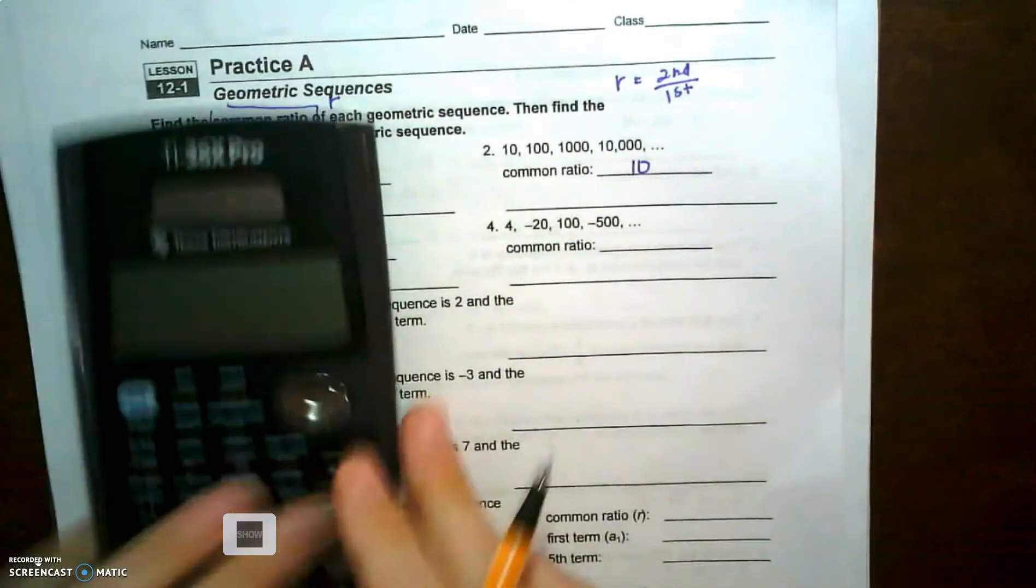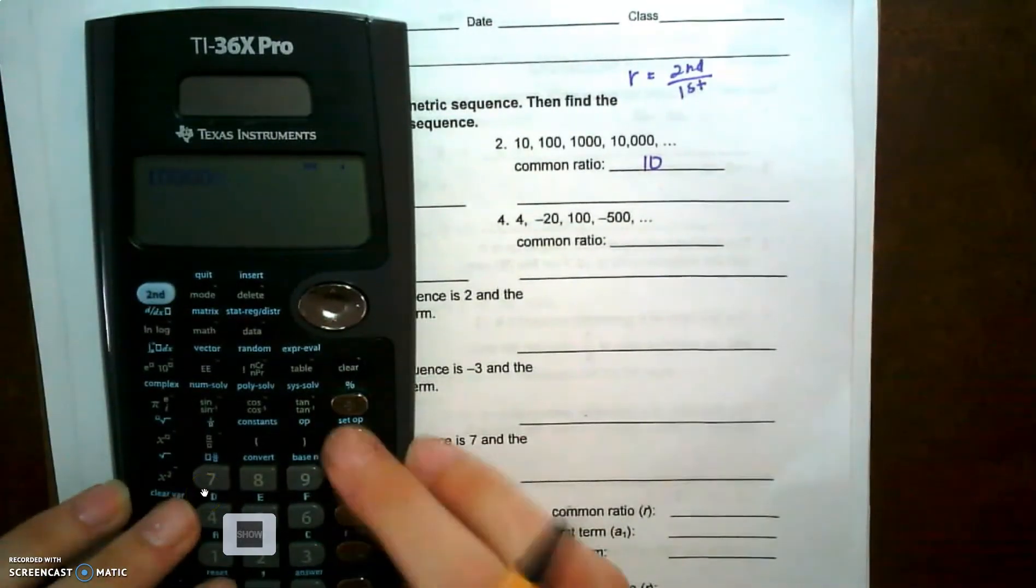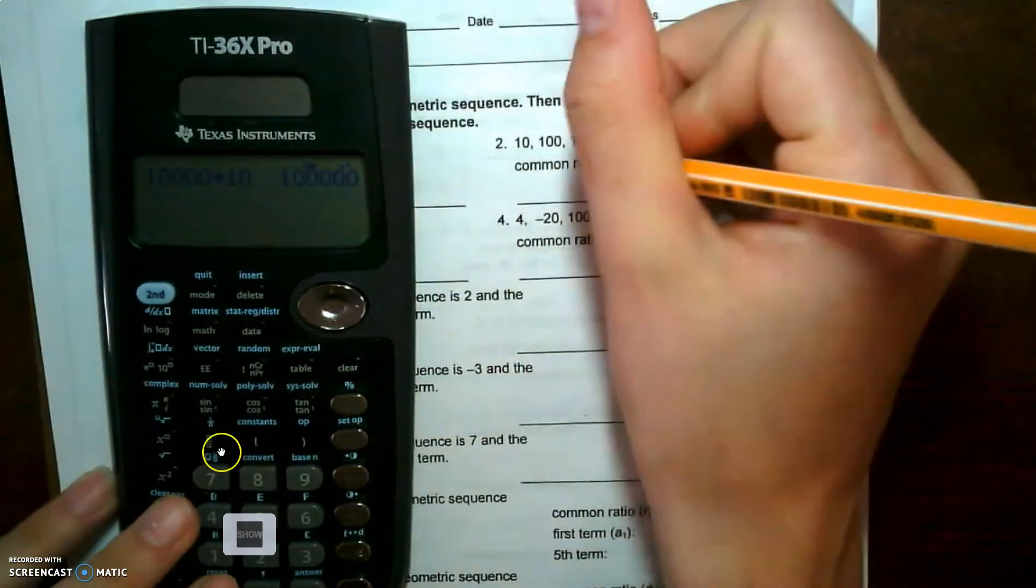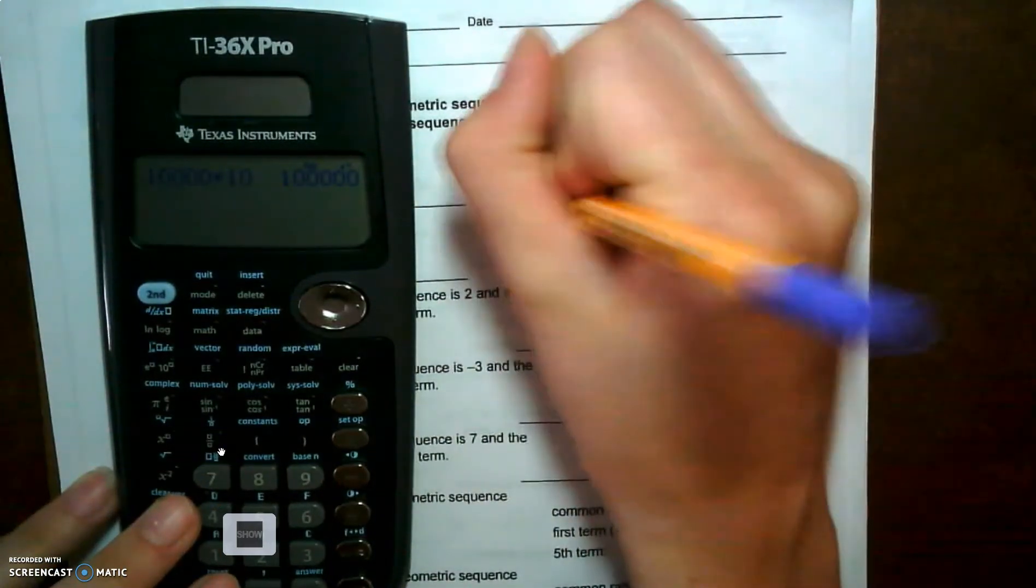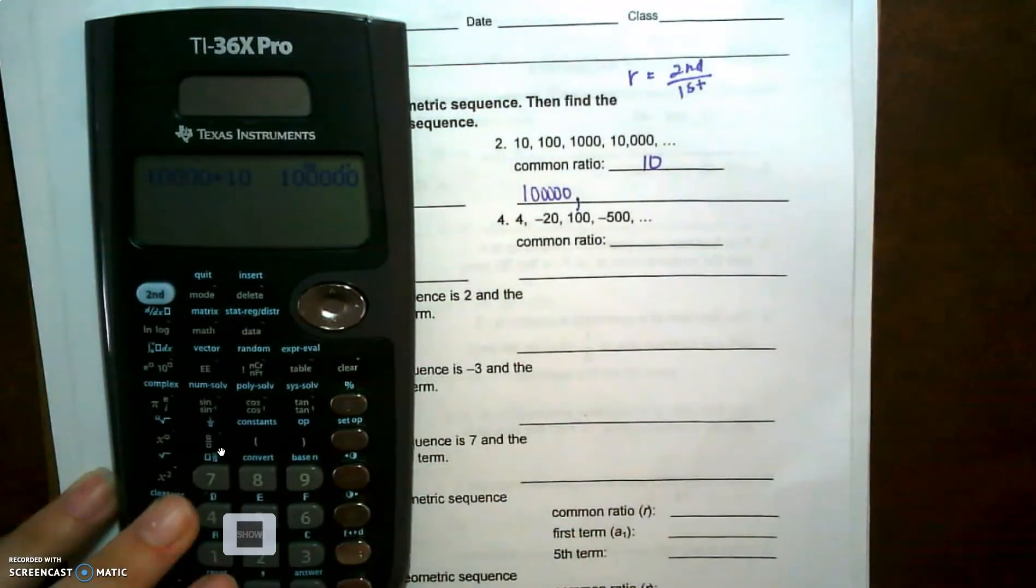So to find the next three terms, we're going to take ten and multiply it by ten - ten thousand, so five zeros. And then we're going to take that and multiply it by ten.